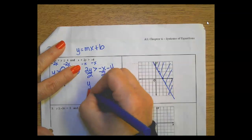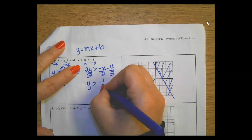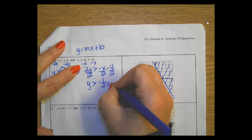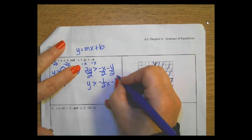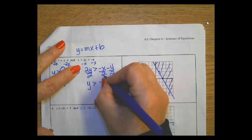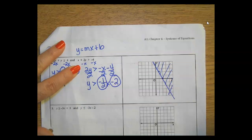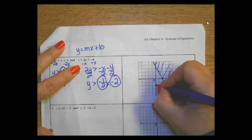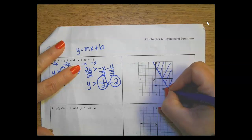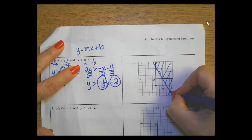Divide 2 to everything, so y is greater than negative 1/2 x minus 2. Y-intercept, slope. Start at negative 2, go down 1 positive 2, down 1 positive 2.